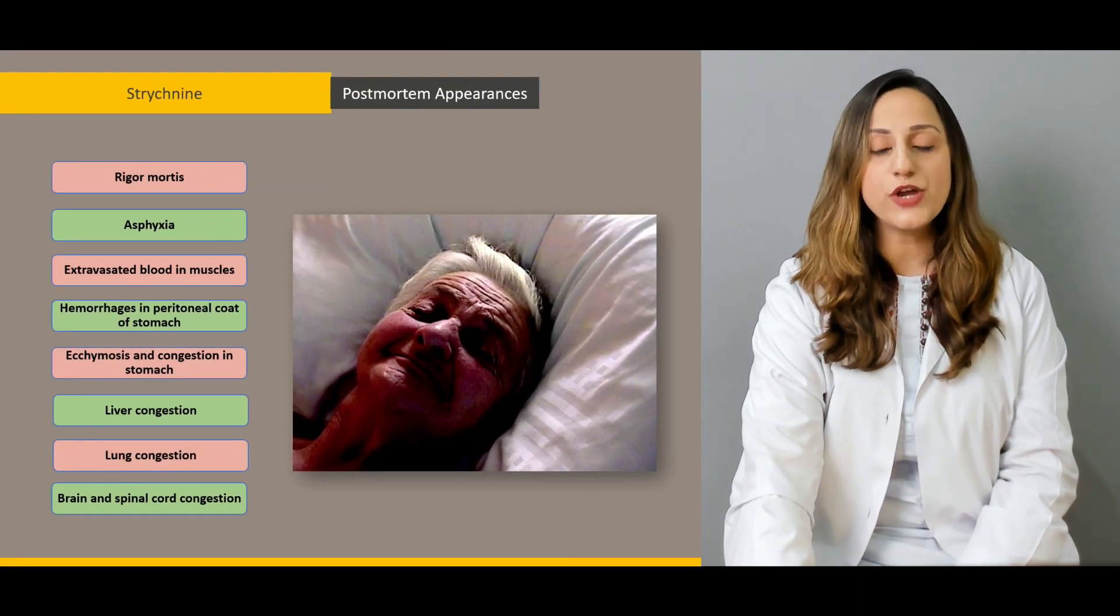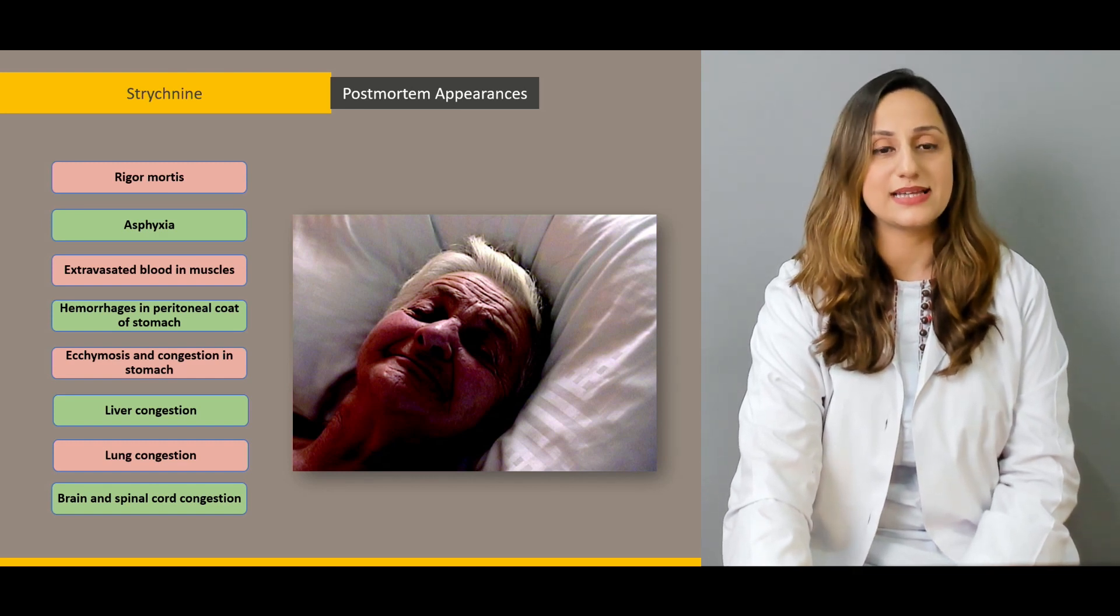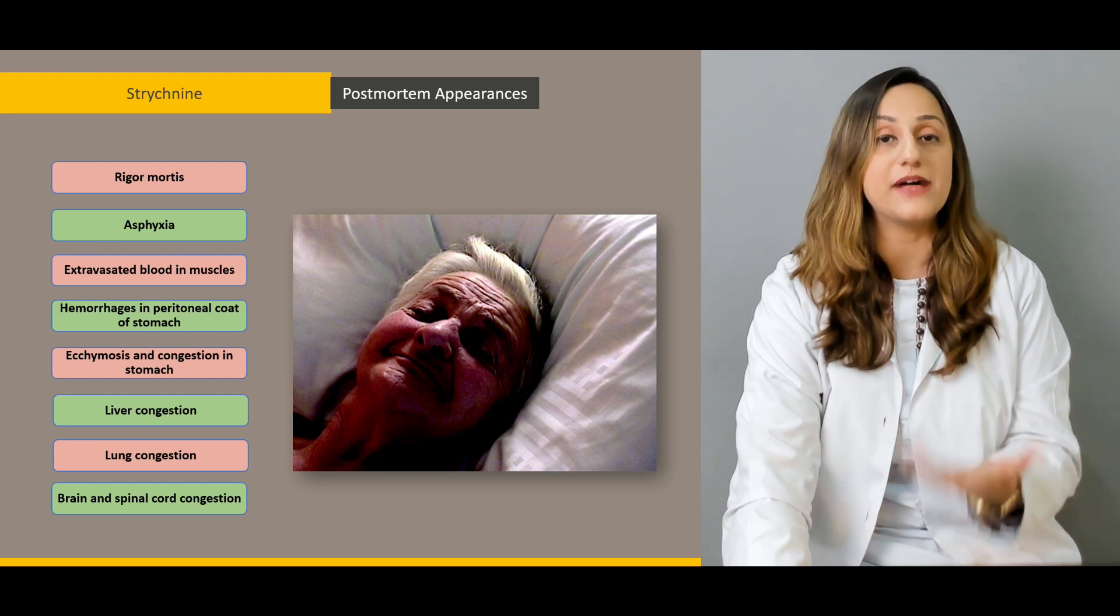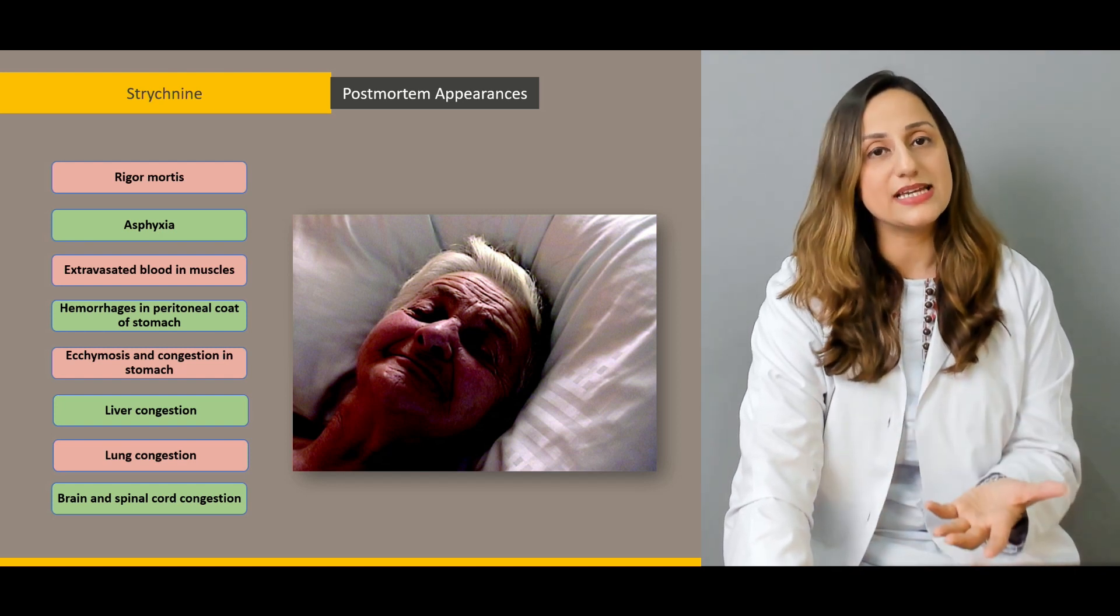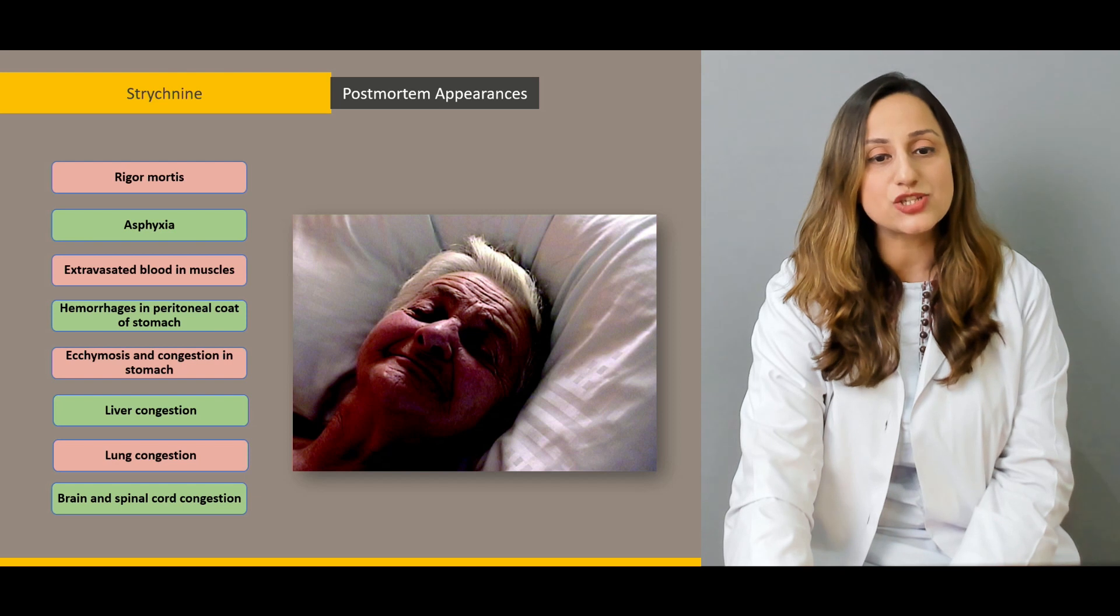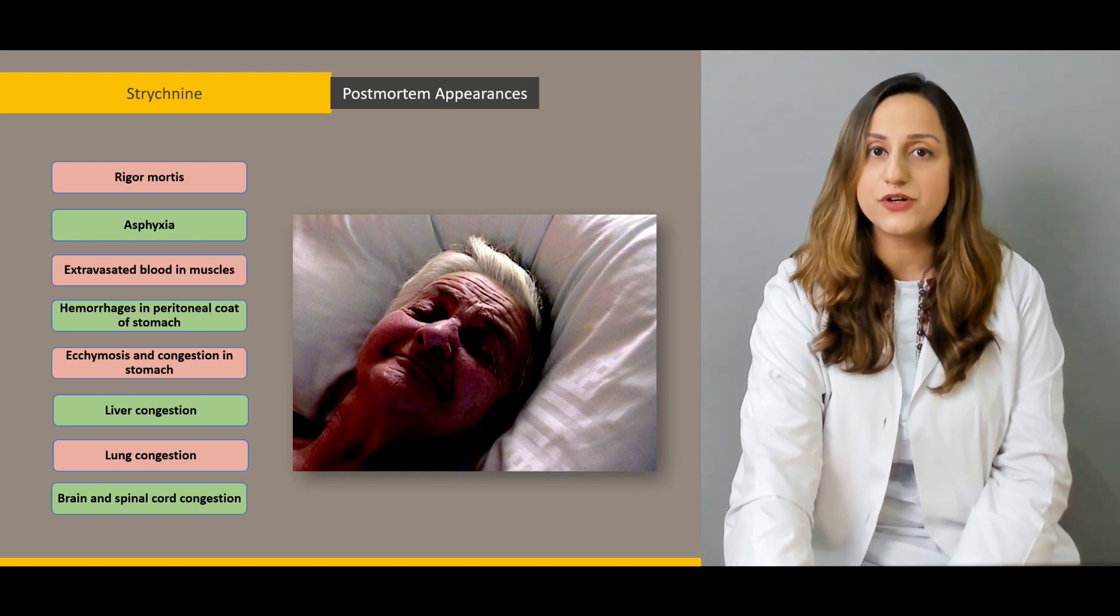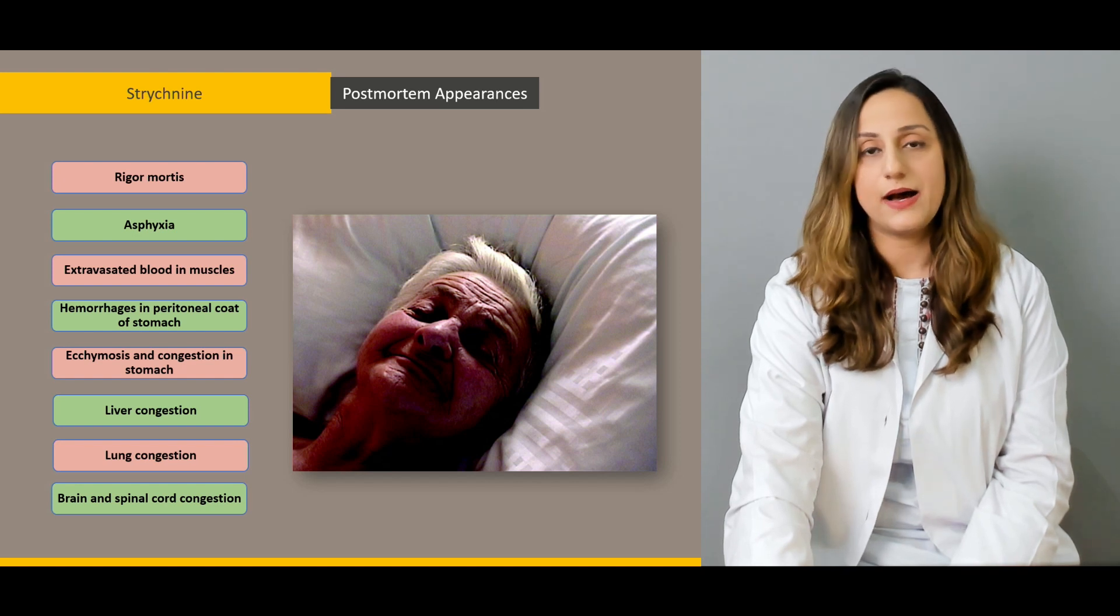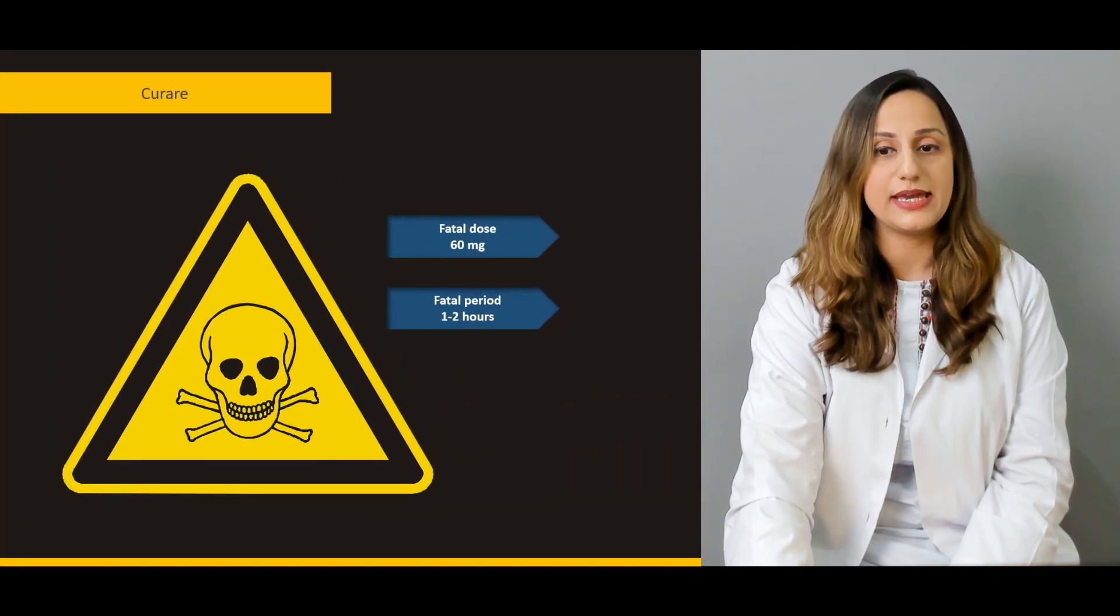Moving on, the post-mortem appearances will be discussed in detail. Specifically, how does the rigor mortis develop? What are the asphyxiating features seen in such a case? Specific liver, lung, brain, and spinal cord congestions as we see in these particular cases.